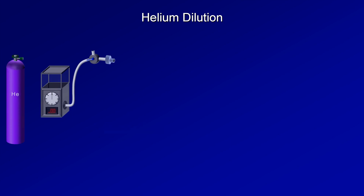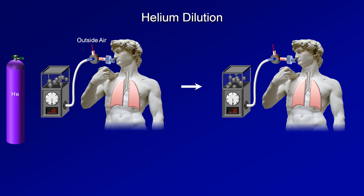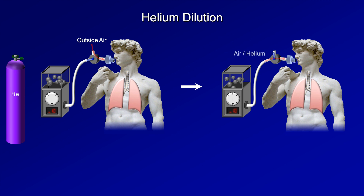In the helium dilution technique, we start with a reservoir which is attached to a device which can measure the concentration of helium contained within, as well as a three-way stopcock and a mouthpiece. The source of helium is attached and the reservoir is filled to some predetermined concentration of helium. The patient then puts his mouth around the mouthpiece, first breathing in outside air with normal tidal volumes. Then when the patient is at a normal end expiration — that is when the lungs are at the functional residual capacity — the technician turns the stopcock and the patient begins to breathe the helium-air mixture.